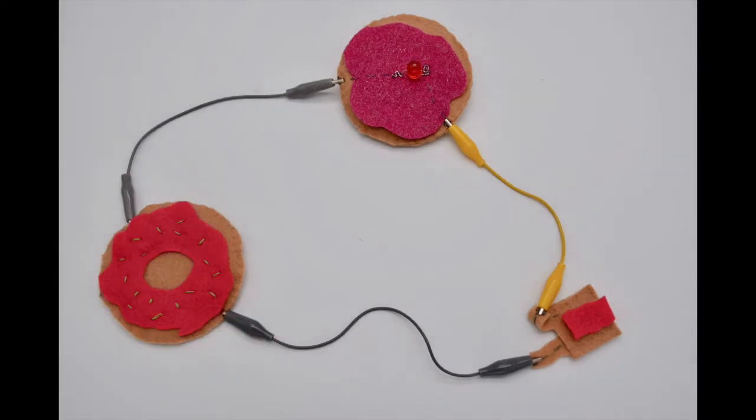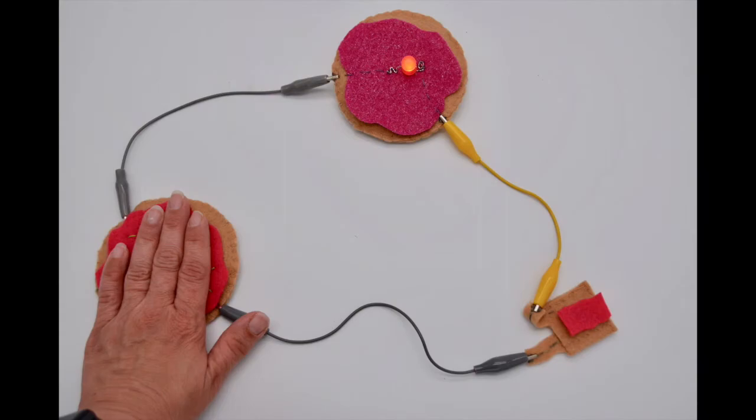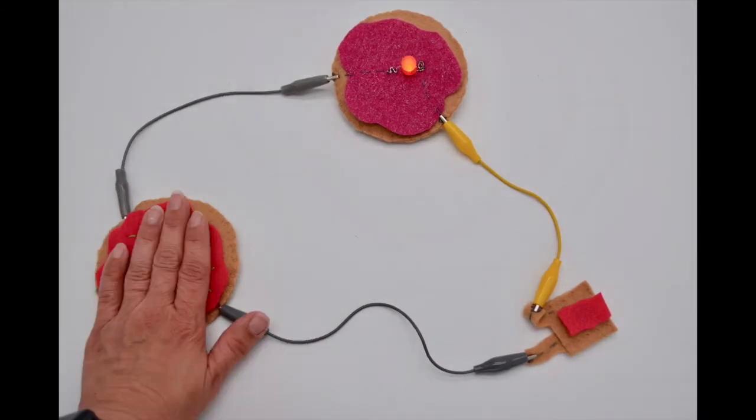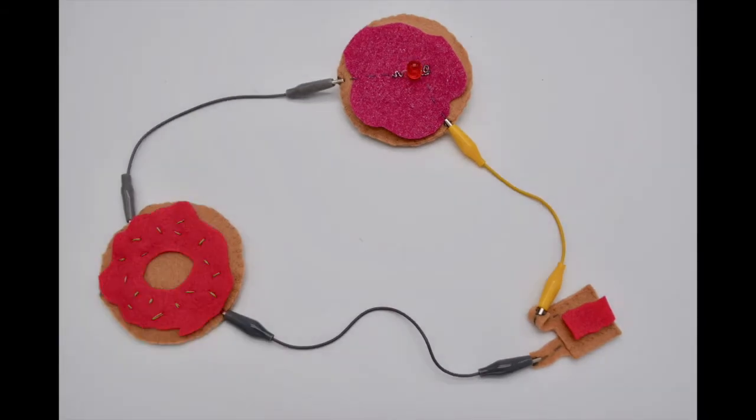To hook this up for a battery, you're just going to hook the positive side to the positive side of your LED, and then you're going to hook the negative side to the doughnut and the other negative side from the doughnut to the negative side of the LED. And that's going to break your circuit until you press on the doughnut.